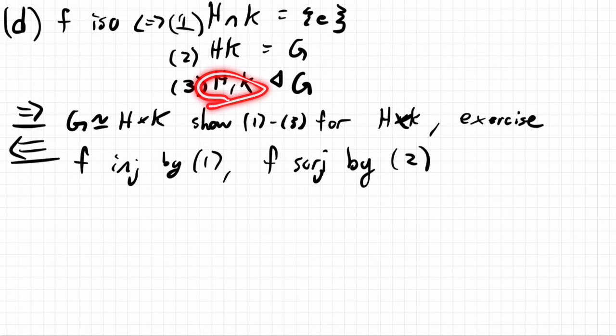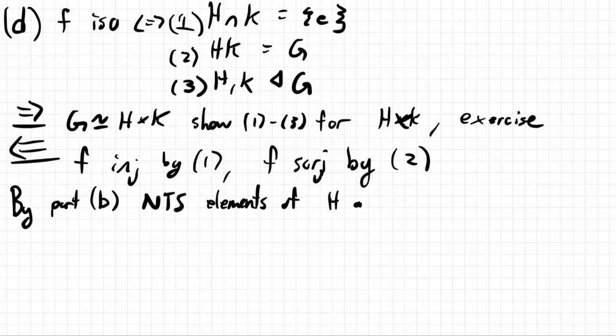And then we need to show that f is a homomorphism. So that'll take a little work. But since before, what we need to show, so by part B, I guess I should say part B. So what did part B say, need to show that elements of h and k commute. And so what we'll do is we're going to do a funny, maybe a funny trick that's similar to what we did in one of the directions of part A.